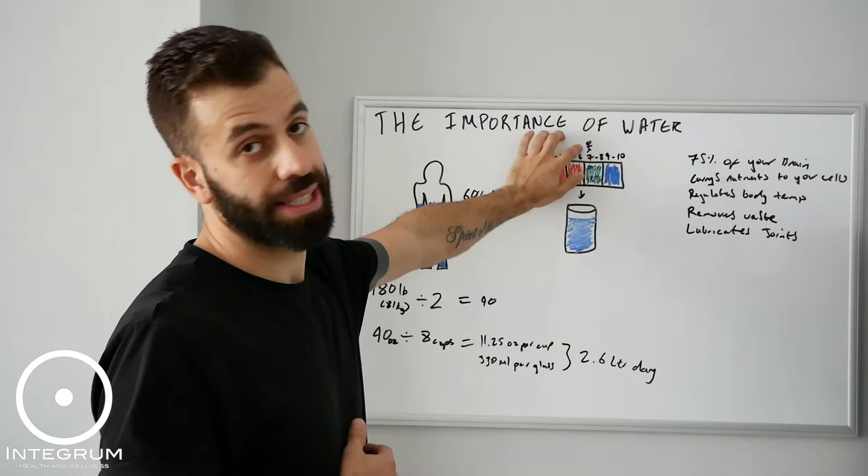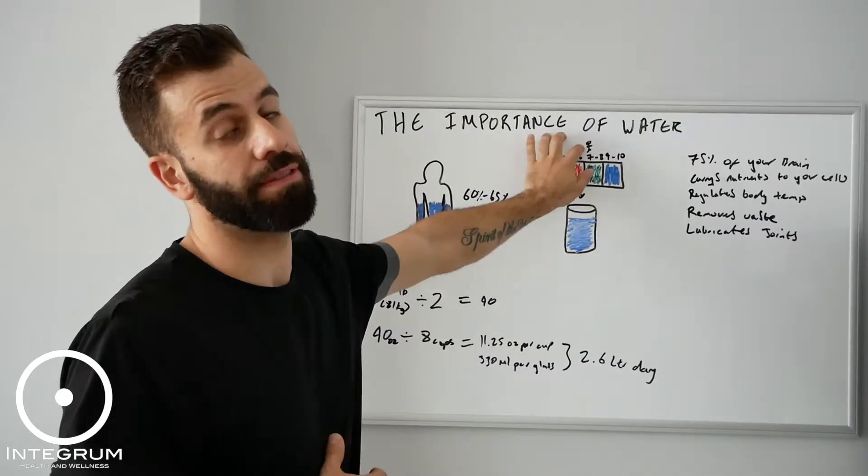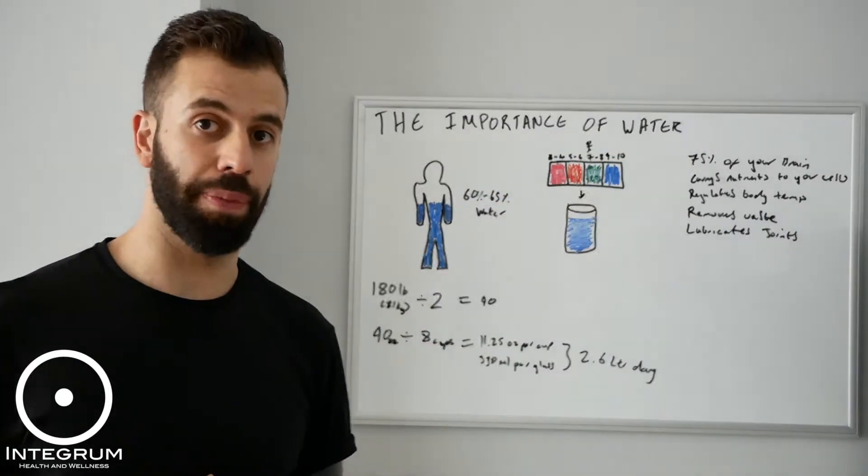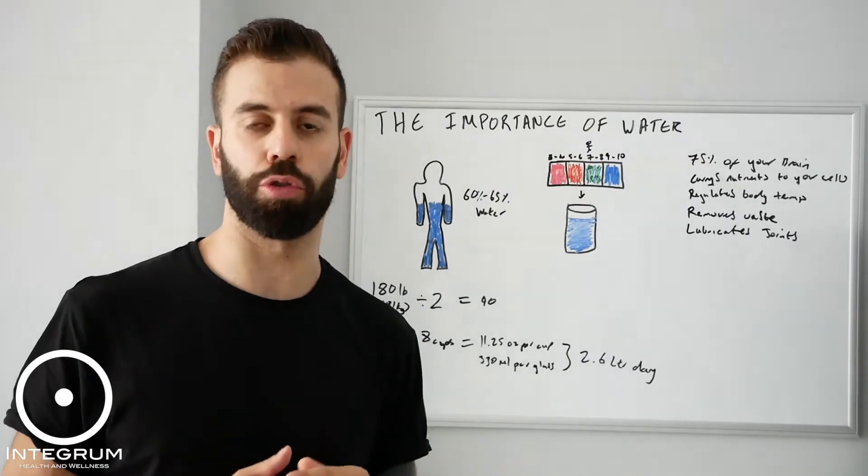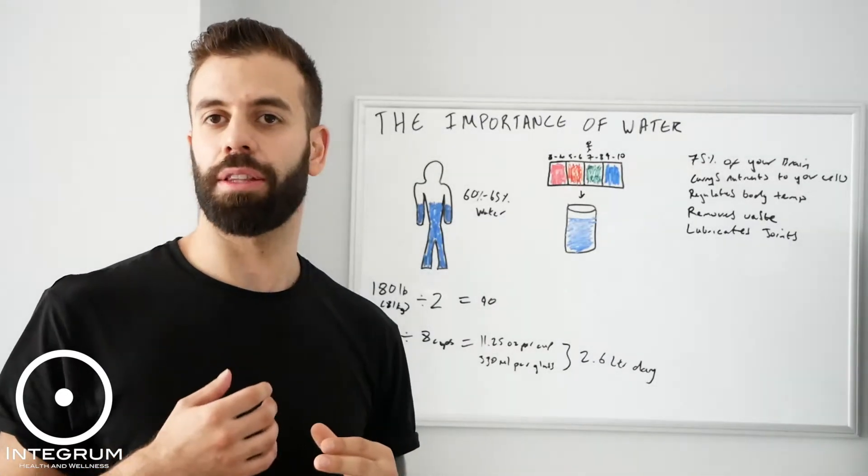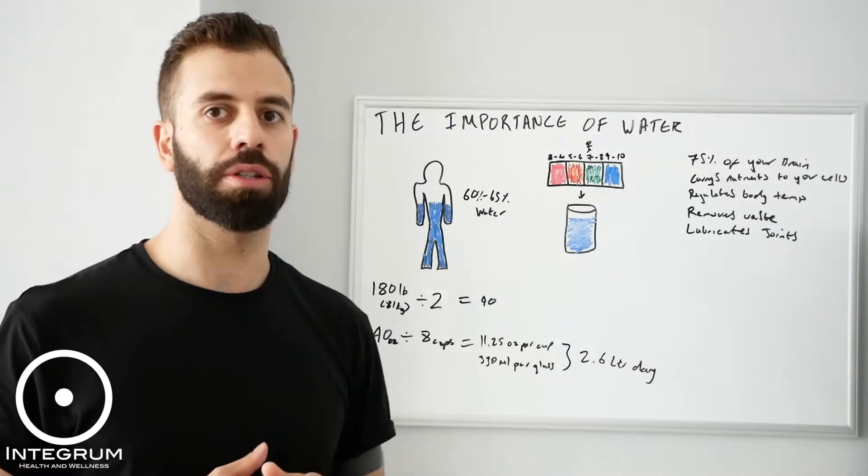The human body sits at around 6.5 to 7 as an ideal healthy pH. So that's about neutral, which would make you think that you'd want to drink a neutral water to meet with that.